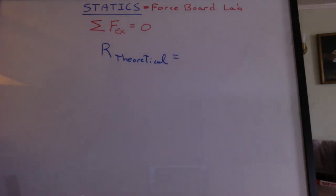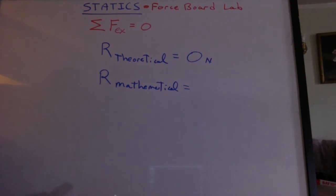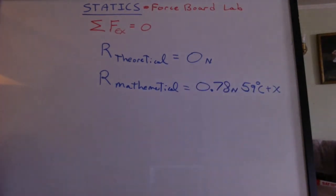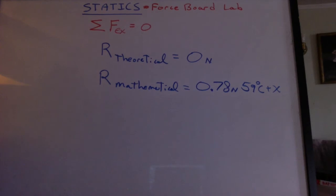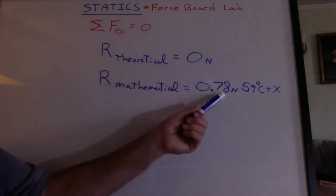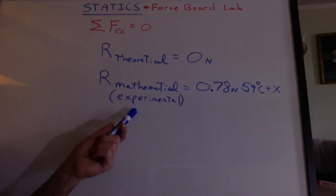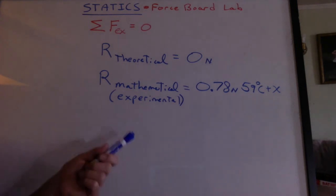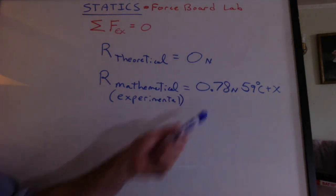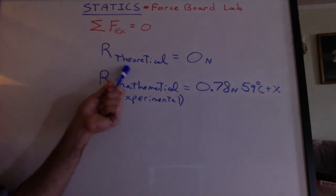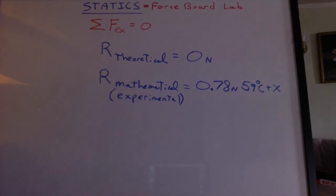Well that means the resultant of the forces theoretically should be 0 newtons. And the resultant mathematically for that last problem, 0.78 newtons, 59 degrees clockwise from the positive x-axis. So what does this mathematical resultant actually tell us? If the theoretical value should be 0, then we can think of this as our error. In this lab, you can think of this as also your experimental value because you did add up the force vectors from the spring scales. But now that we know something, we can say that the theoretical value should have been 0.